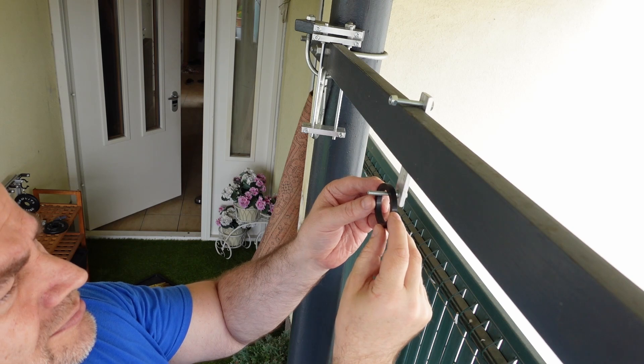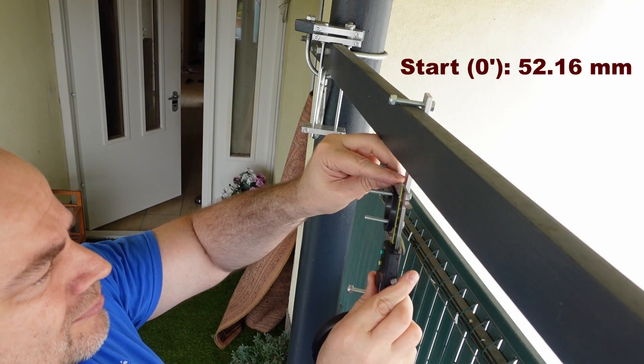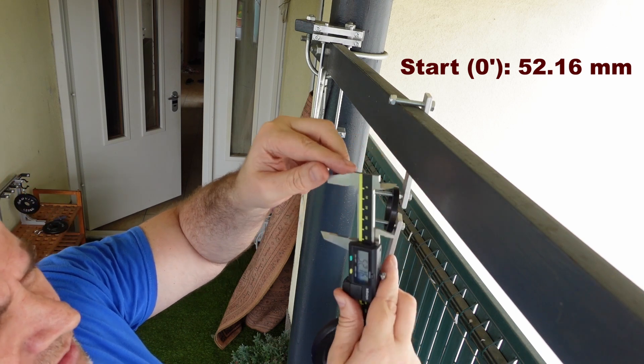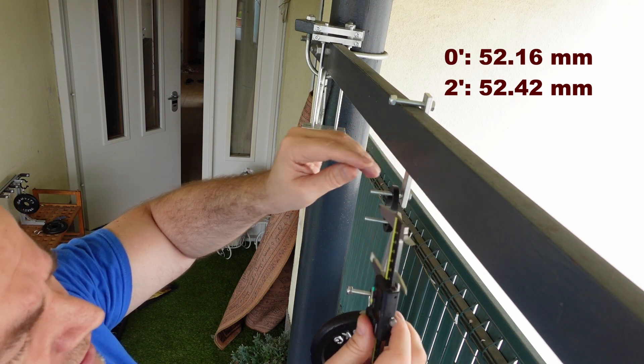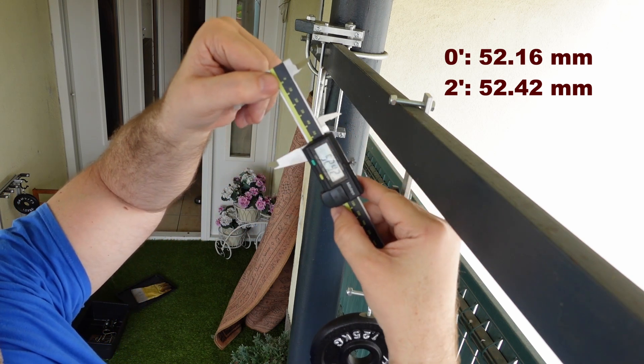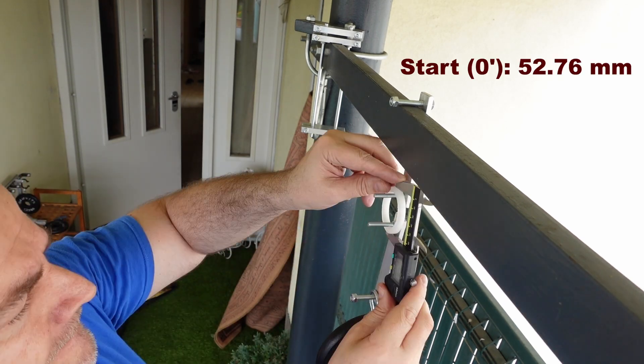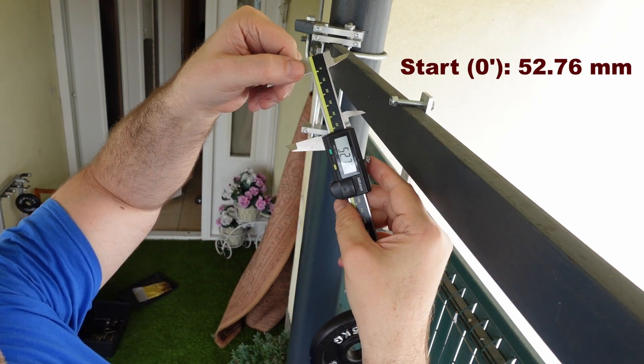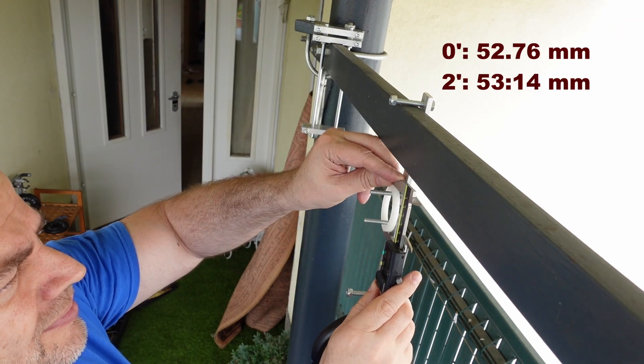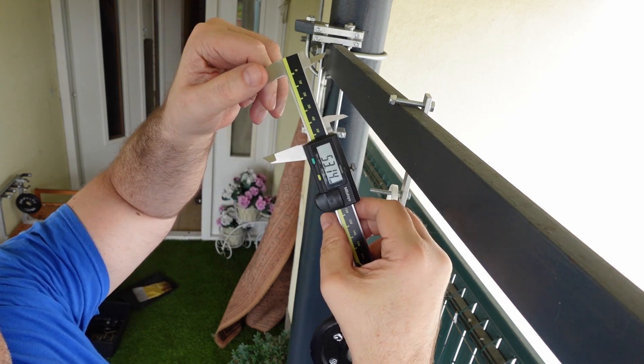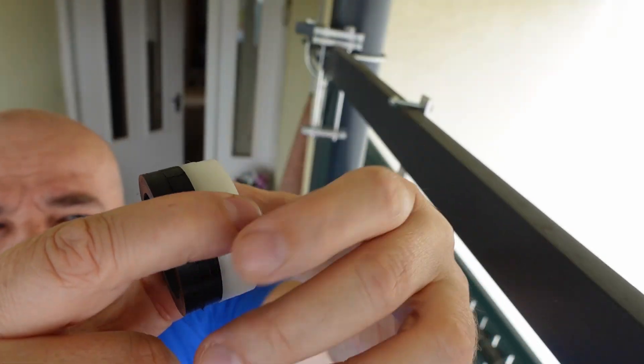And then this is some kind of pulling or tensile and bending test. Again 1.25 kilogram load on it. The start dimensions 52.16 millimeters and after two minutes 52.42. And this is now antimicrobial TPU. Start deformation 52.76 and after two minutes 53.14. And again I cannot see any visual deformation on them.